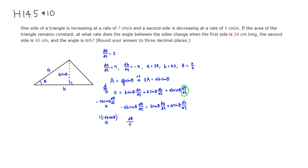Plugging in the numbers: b is 40, sine of pi over 6 is 1/2, da/dt is positive 7, a is 28, sine of pi over 6 is 1/2, db/dt is negative 4. Dividing by negative a·b·cosine(theta): negative 28 times 40 times cosine of pi over 6, which is square root of 3 over 2.